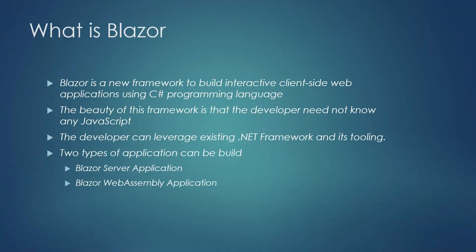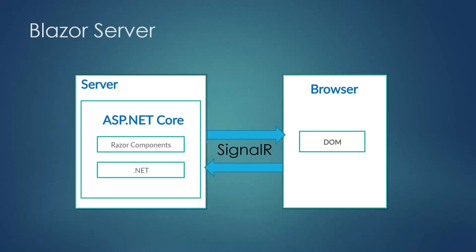Using this Blazor framework, a user can create two different types of application. The first one is a Blazor Server application which executes on the server, and the second one is a Blazor WebAssembly application that executes in the client's browser. The Blazor Server application executes on the server as an ASP.NET Core application, and all the Razor components are served to the client's browser using HTML pages. When a user performs any operation on the browser, the request is sent back to the server, which executes the operation and sends back the response using SignalR technology.